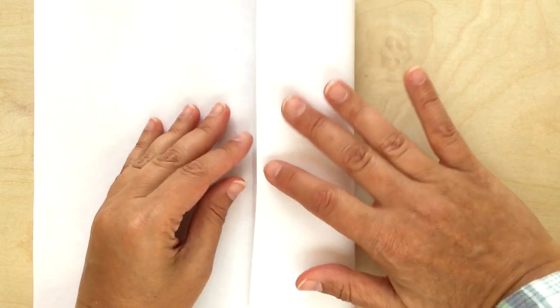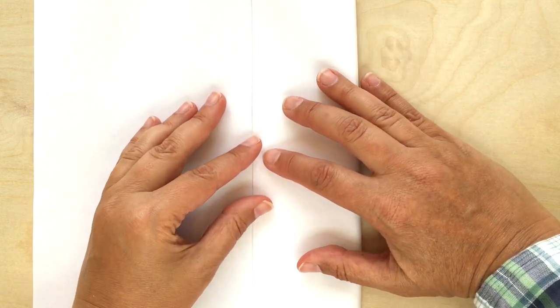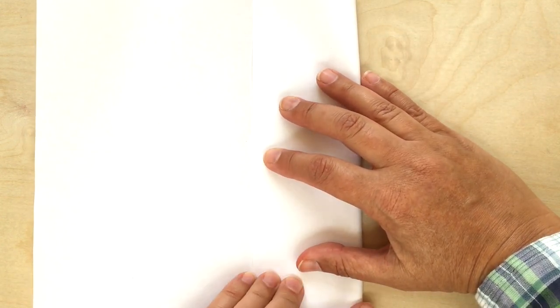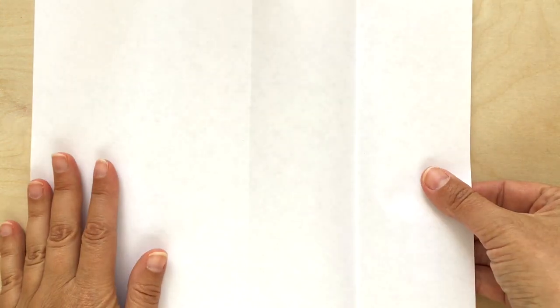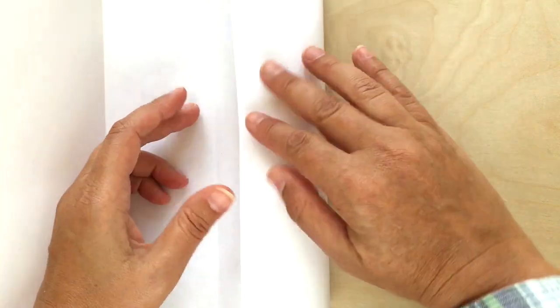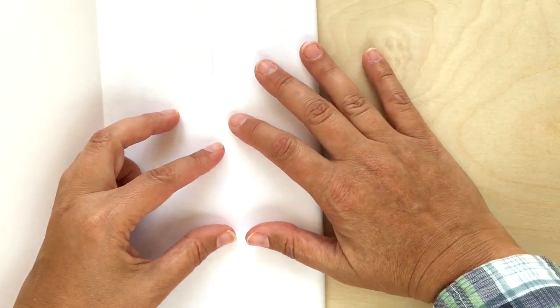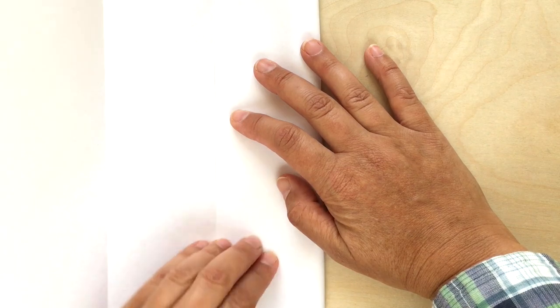Then you're going to fold the edge back towards that middle crease just like this. Again making sure to get a really good crease. And then I'm going to flip this over so that I can fold it again for you, but you just do the same thing on the other side and fold it back towards the middle just like this.